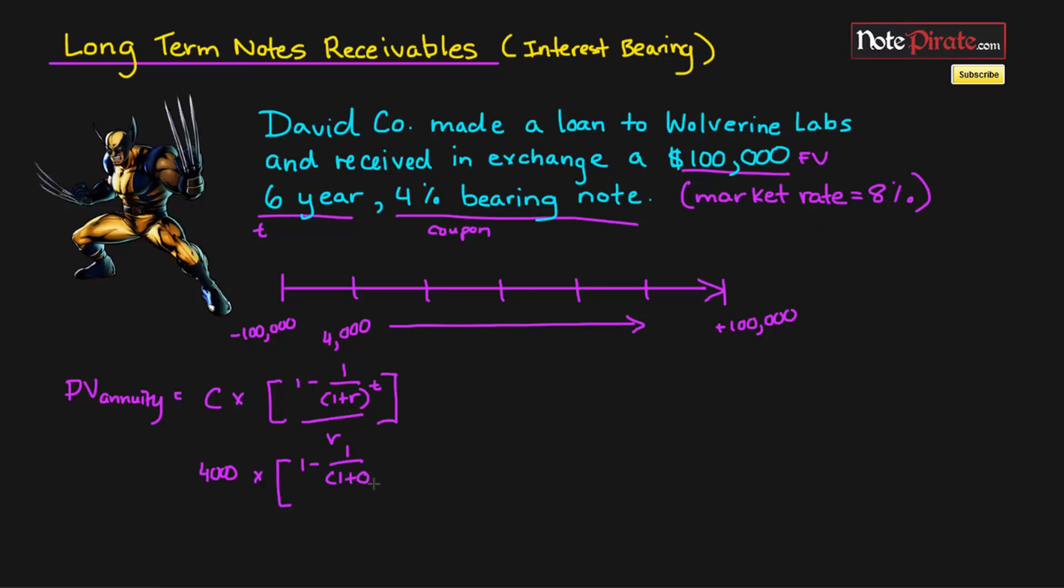Remember, always, always market rate, always use effective rates. And then the term is 6 years, so to the power of 6, and we divide by the market rate once again. And this entire boxed-in area is actually going to equal 4.622879664.